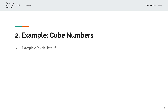In the second example, we're asked to calculate 9 to the power of 3, or 9 cubed. So 9 cubed equals 729.